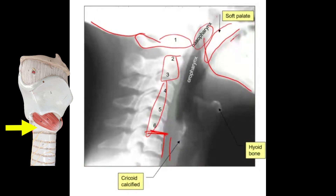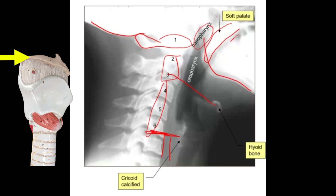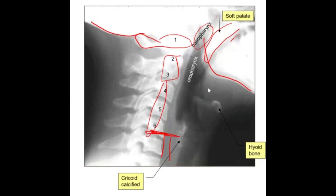The cricoid cartilage is located at C6, so C6 marks the beginning of the trachea and the esophagus. You can also see the hyoid bone, which is almost at the level of C3. The hyoid bone does not articulate with any other bone — it is only connected by ligaments or muscles, but there is no joint connecting it.